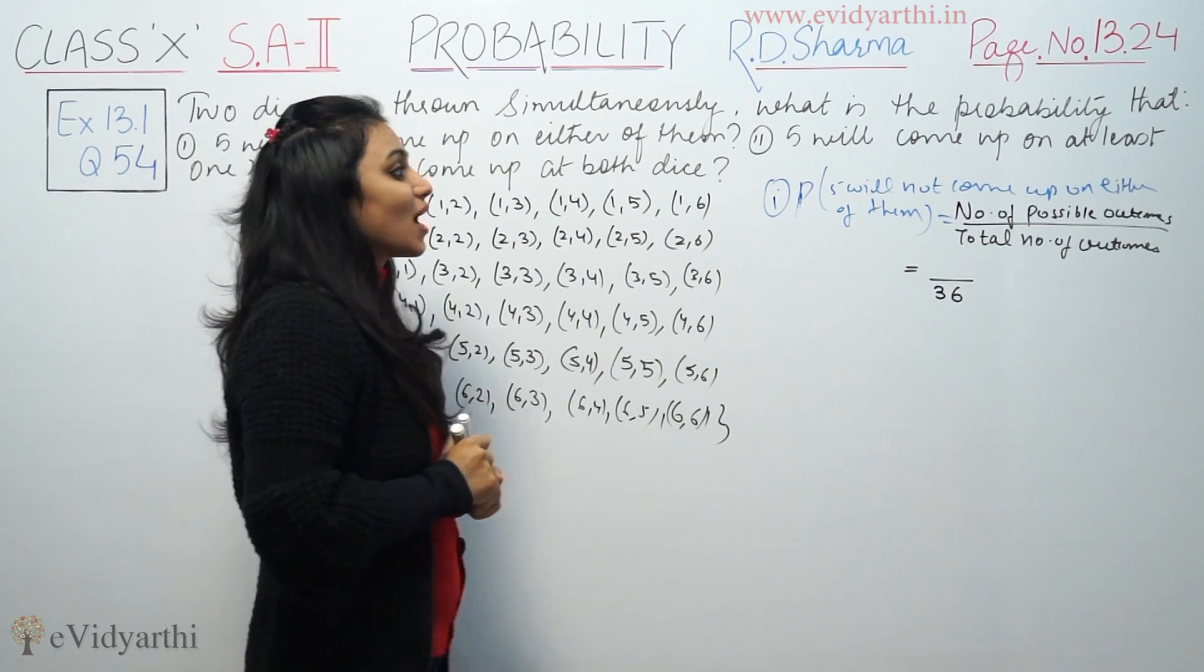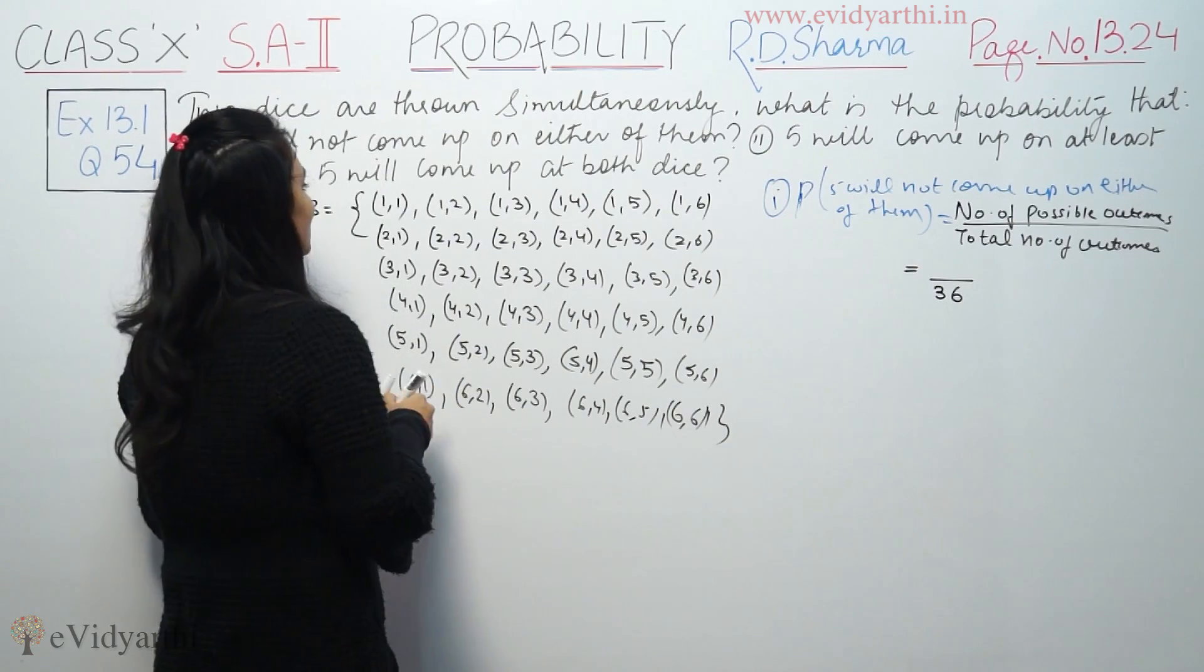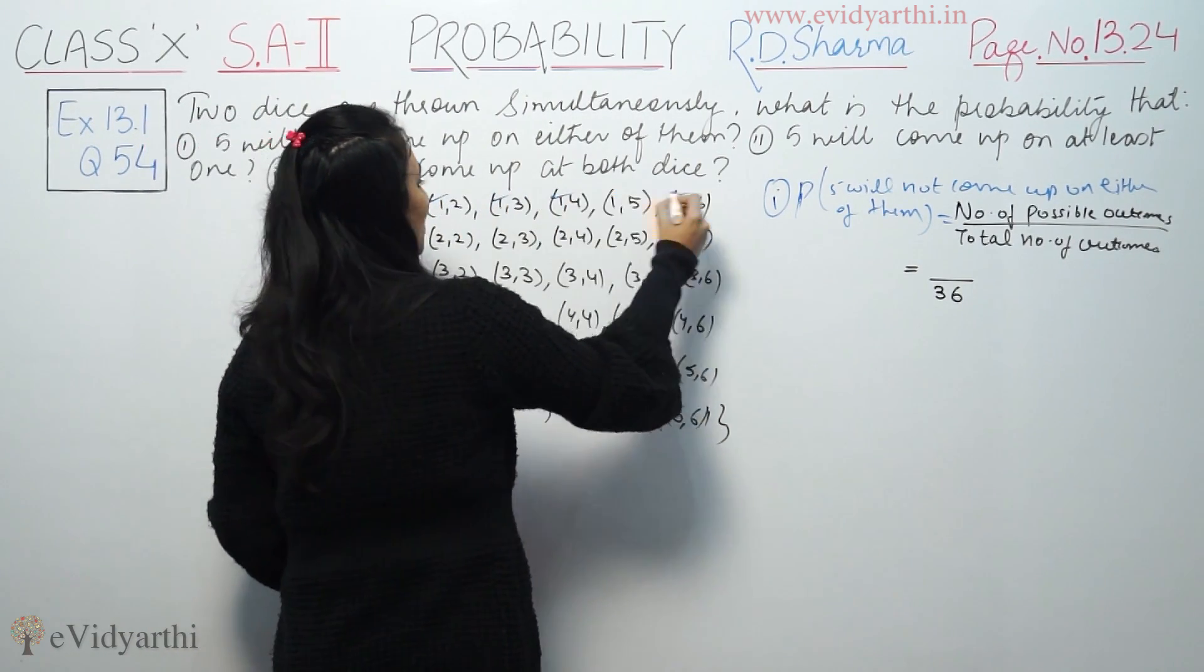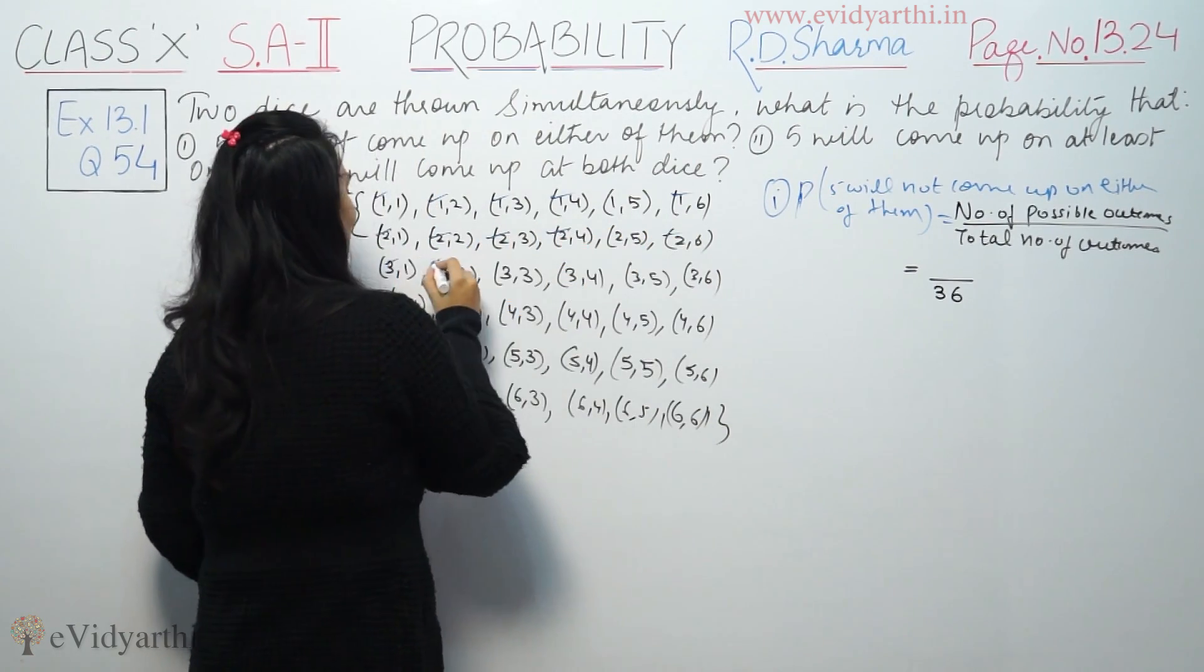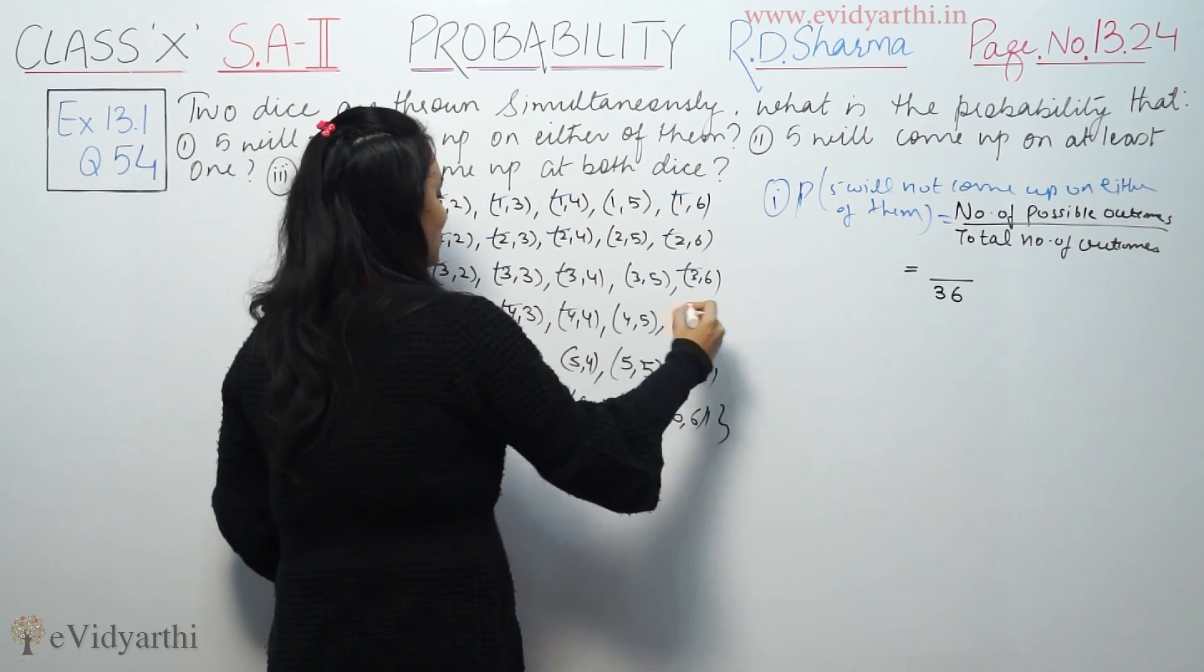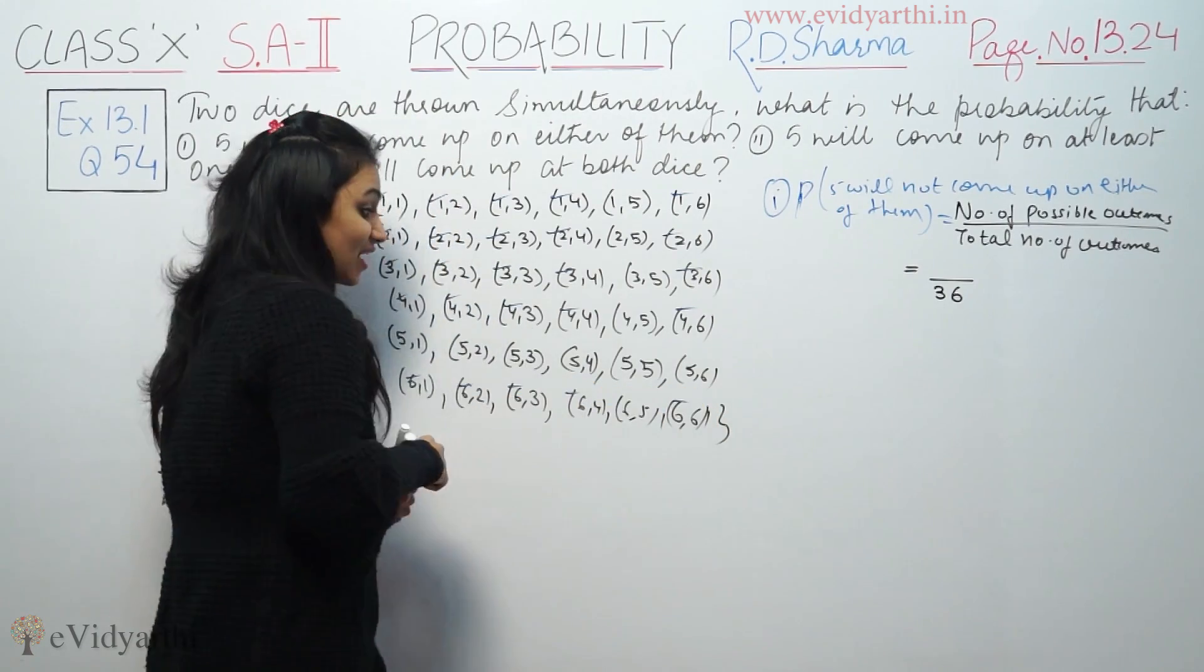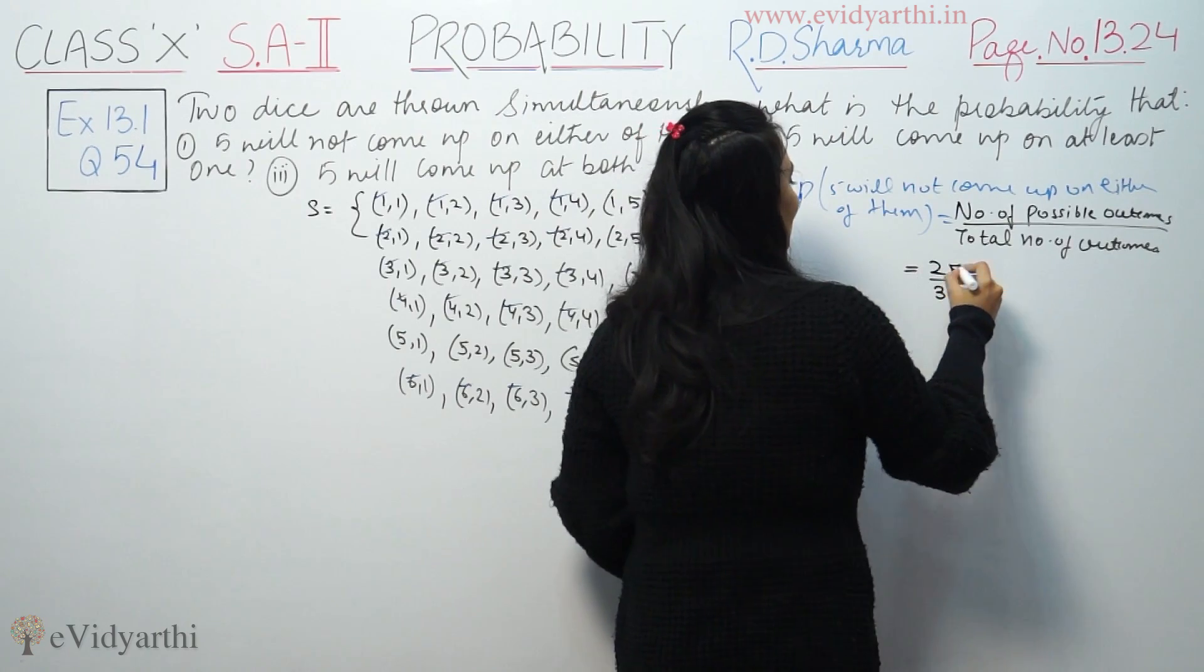5 will not come up either of them. Counting: 1, 2, 3, 4, 6, 7, 8, 9, 10, 11, 12, 13, 14, 16, 17, 18, 20... 25 cases where 5 is not present. So the probability is 25 by 36.